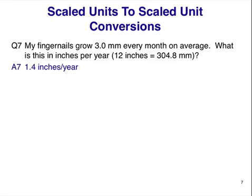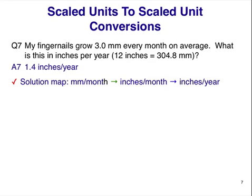The correct answer is 1.4 inches per year. If you struggled with this one, let me show you how to do it. It's a very good idea to write down a solution map for all unit conversions. In this case, we're going to convert millimeters per month into inches per month into inches per year.